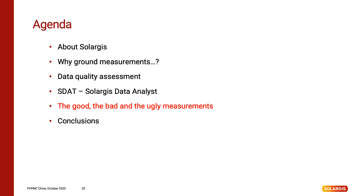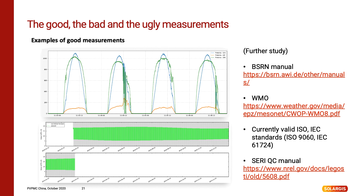For the last part I have prepared a list of examples and errors which we have detected in datasets. It is not a full list, it is just an illustration of what can happen during a measurement campaign. This is an example of a good dataset with no detected errors and some daily profiles. As I mentioned before, it is not easy to obtain such a dataset. The majority of data usually have some flaws. On the right side there are some links for further study or inspiration on how to perform a good measurement campaign.